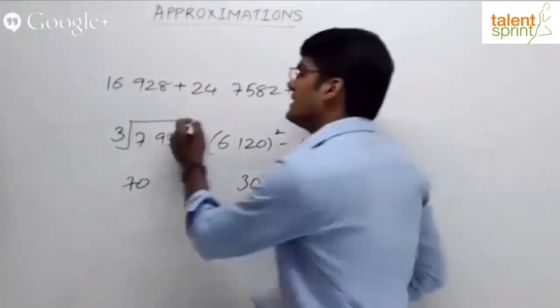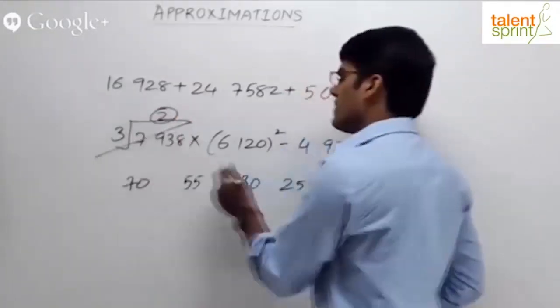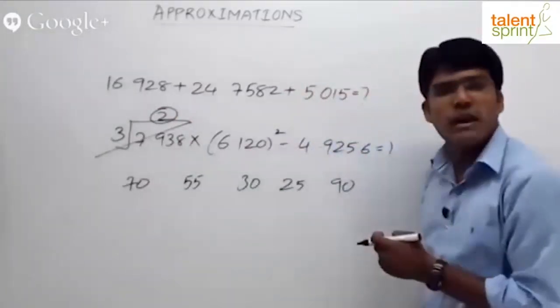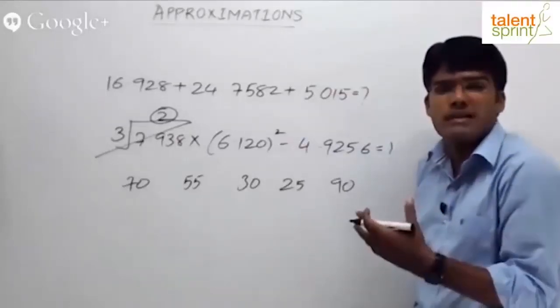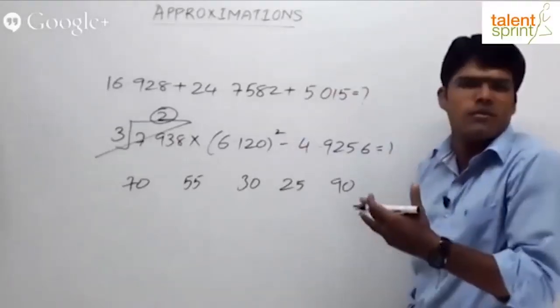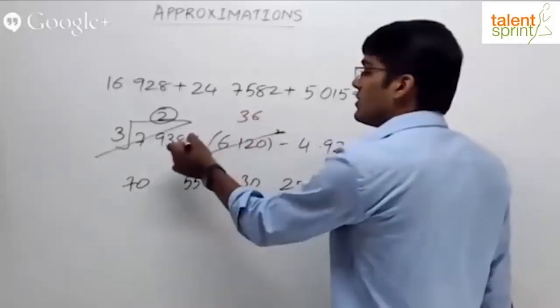What about 6.120 whole square? 6 squared, right? 6.12 approximately 6, 6 squared is 36. Now 2 into 36 minus 4.9256 can be taken as 5.